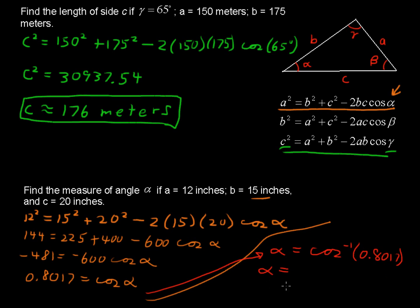So then, in the end, alpha is approximately equal to 36.7 degrees. So there's a couple of examples. One trying to find a side length, the other trying to find an angle measurement using the law of cosines.